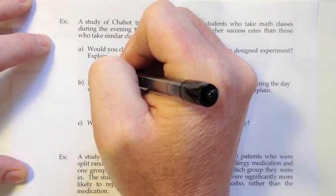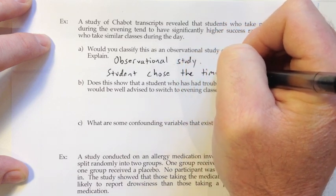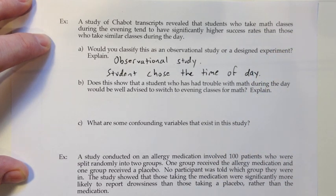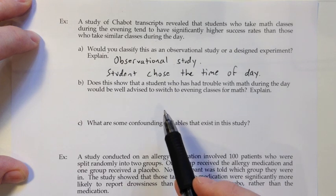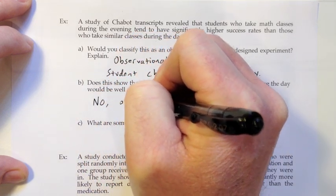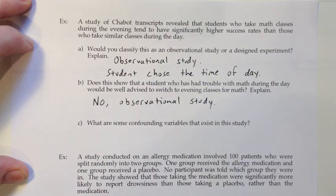The reason is that the student chose the time of day. Does this show that a student who had trouble with math during the day would be well advised to switch to evening classes? That's possible, but we can't say that cause and effect has been shown here because this is just an observational study. The success rates are higher at night, but we're not sure what the reason is — it could be the time of day itself, or it could be some other confounding variables.